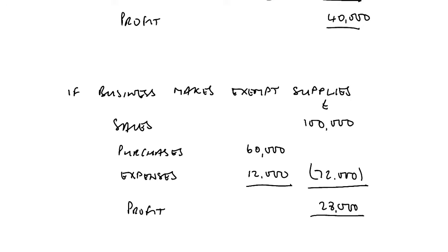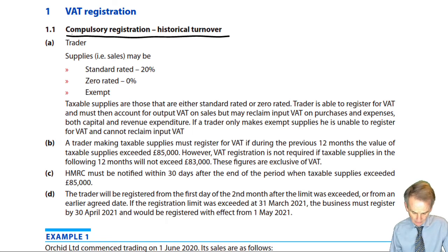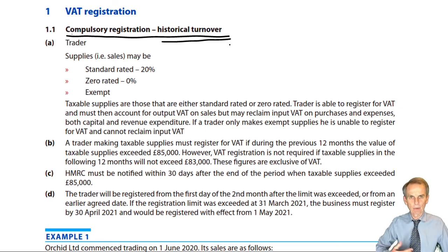If we make taxable supplies, we have a right to register for VAT. If we do not make any taxable supplies, we cannot register, with the consequential effects on base costs we've seen. But if we do make taxable supplies, we may choose to register voluntarily. We'll look at the basis of voluntary registration shortly. But the first issue a new business client may be concerned with is when do they have to register — so, what about compulsory registration?